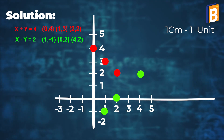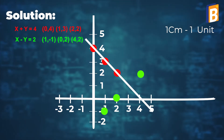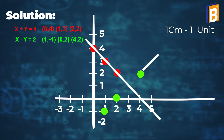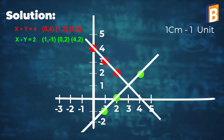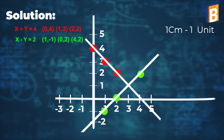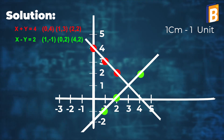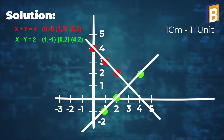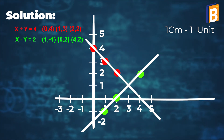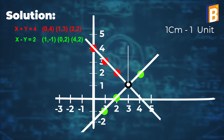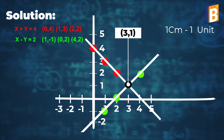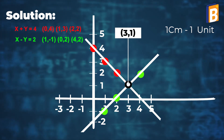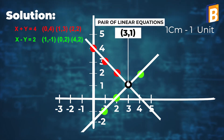Join these points. After joining, we will get the lines of the linear equations x plus y equal to 4 and x minus y equal to 2. We can see both of the lines are intersecting at point 3 and 1, so this point is known as the solution of the pair of linear equations.